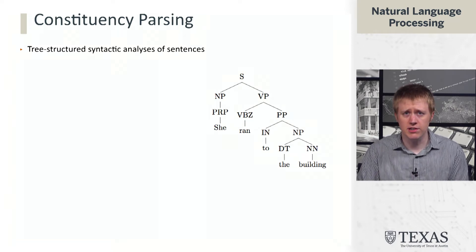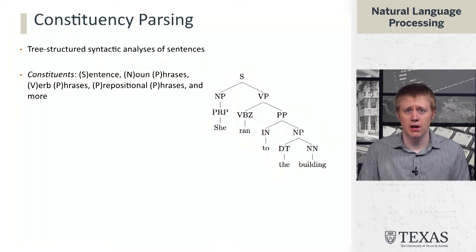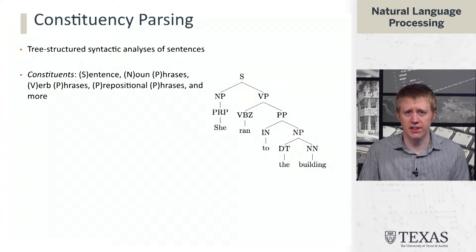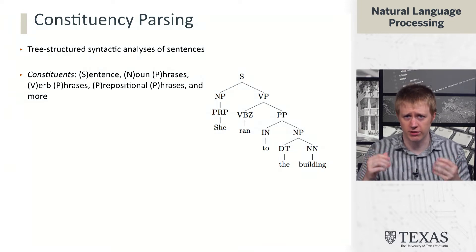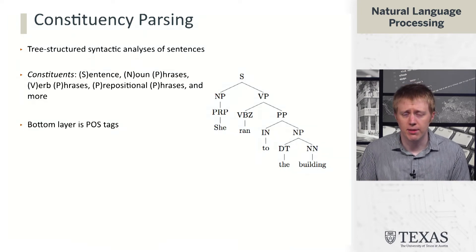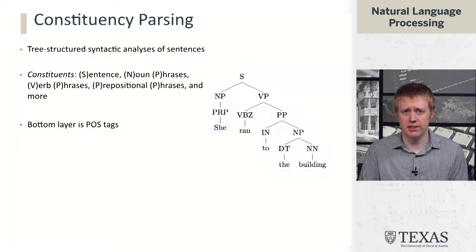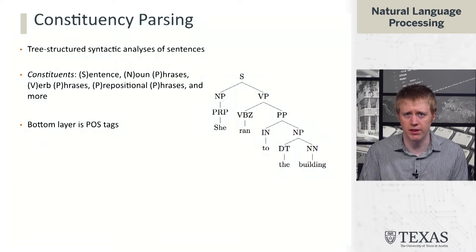So constituency trees give us a tree-structured analysis of sentences in terms of their constituents. We see on the right here an example of a sentence with several different constituent types. At the very top we have sentence, below that we have NP (noun phrase), VP (verb phrase). Farther down we have prepositional phrase, PP, and there's other types that show up in other trees as well. The bottom layer of these trees always consists of part of speech tags. So the tags at the very bottom here are going to be exactly the same as the tags that we were dealing with in part of speech tagging.